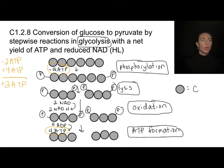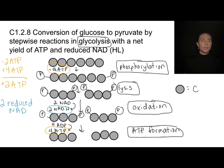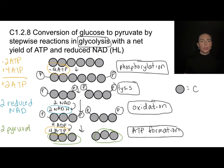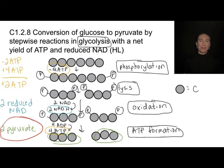In addition to two net ATP, we also make two molecules of reduced NAD — written either as reduced NAD or as NADH. And we have two three-carbon molecules at the end, each called pyruvate. So we've taken a six-carbon molecule and broken it down into two three-carbon molecules, along with these other important byproducts.